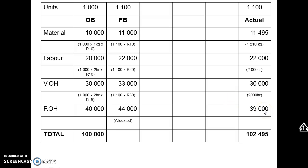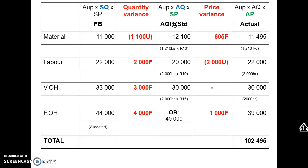The 39,000 was the given actual fixed overheads. As an aside, what's the difference between allocated fixed costs and actual fixed costs? In this case, 5,000 rand. That's the over-allocation of fixed manufacturing overheads — we allocated 5,000 more than what we spent.